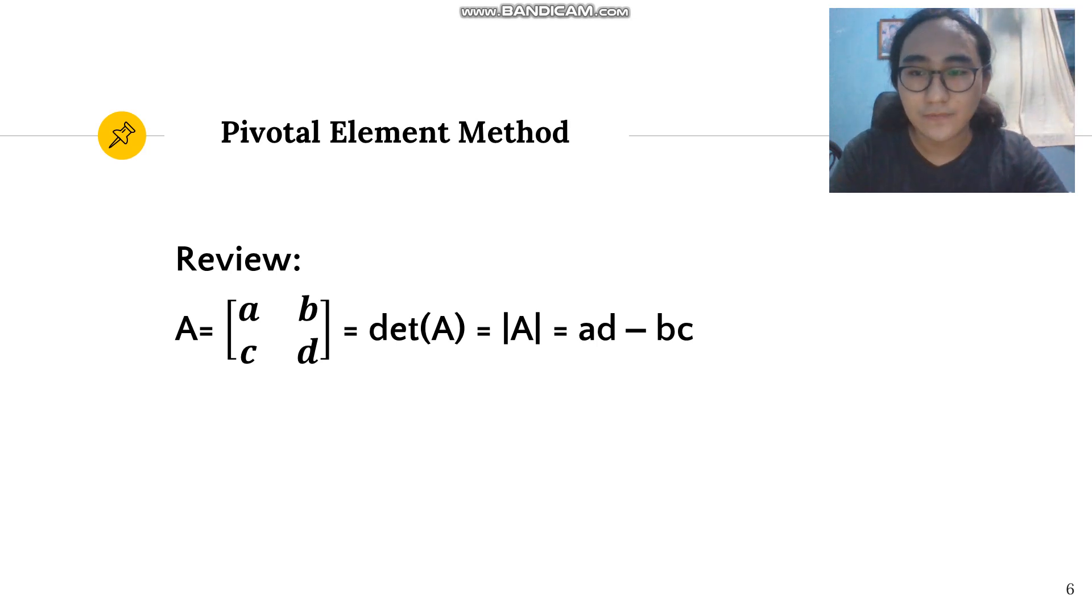So we have a review here, where matrix A is composed of elements A, B, C, D wherein the determinant of A is equal to A times D minus B times C.